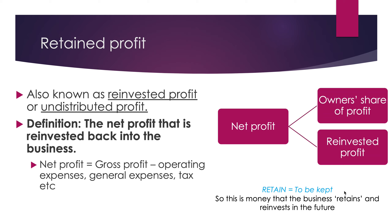In terms of where you will find retained profit in financial statements, it comes under the balance sheet. Looking at a simple balance sheet, you will see it in the equity section. Equity is on the liabilities side of the balance sheet because money the owner invests is a liability — the business owes that money back to the owner. Equity includes capital (money owners invest), plus retained profits, less drawings. So retained profits can be found under equity in the balance sheet.